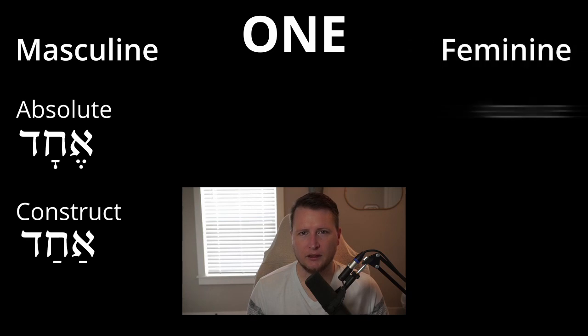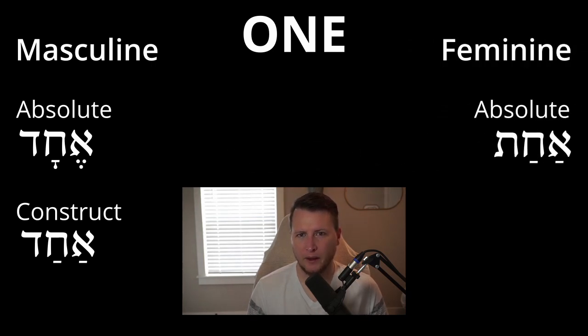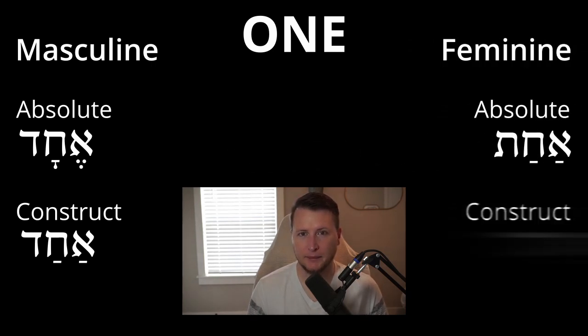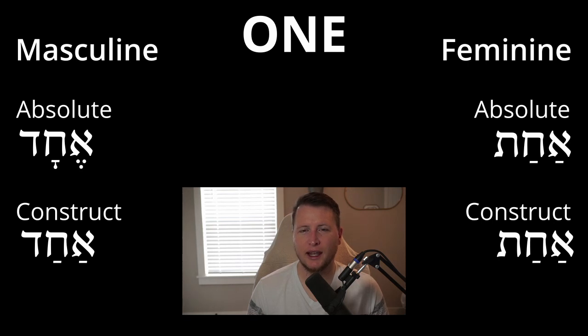The feminine uses Tav. Echad — one, feminine, absolute. Echad — one, feminine, construct. Note that in feminine, the construct and the absolute are identical.